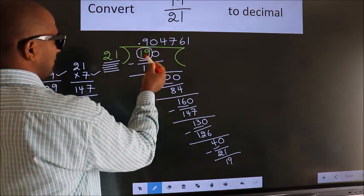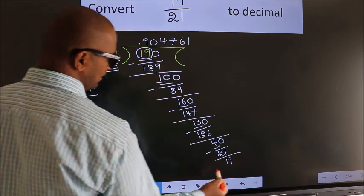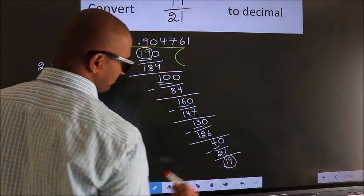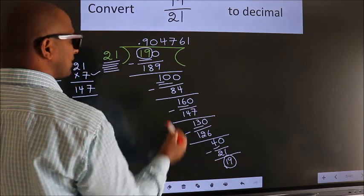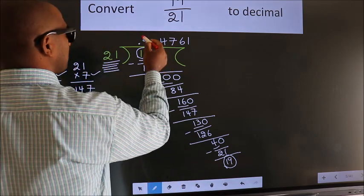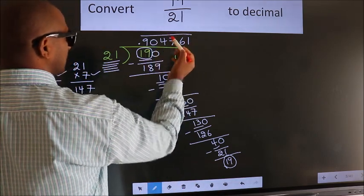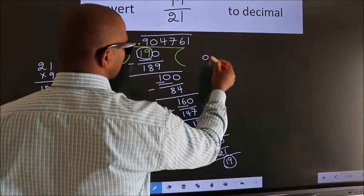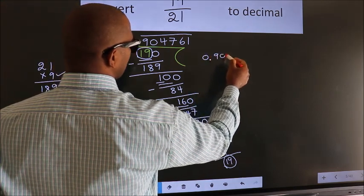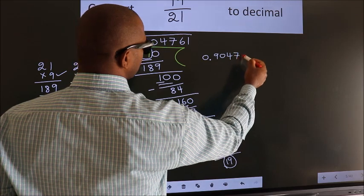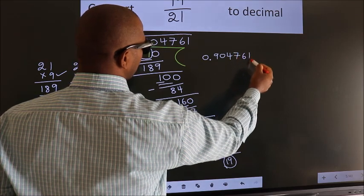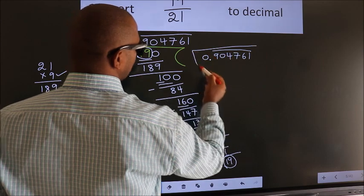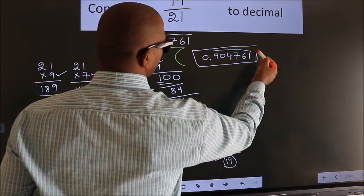Now observe: we had 19 here at the start, and we got 19 again as the remainder. That means we get a bar on these digits. Therefore our answer is 0.904761 with a bar on these numbers. This is our answer.